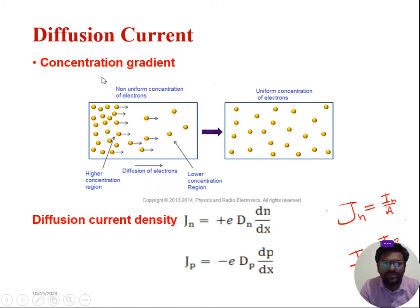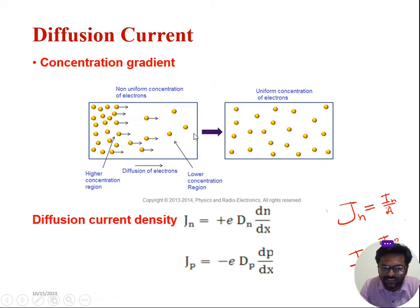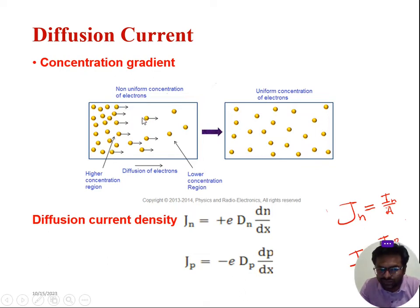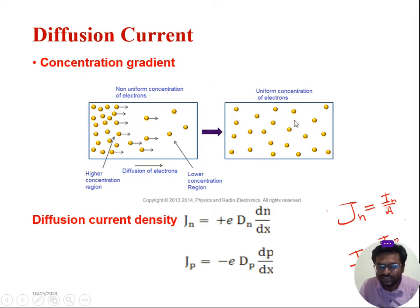Starting with diffusion current: diffusion current exists in the semiconductor because of non-uniform concentration of charge carriers. This status of non-uniform concentration of charge carriers is also called as concentration gradient. Now we try to understand how the concentration gradient will lead to diffusion current. We will see this diagram — in this region charge concentration is very high, here the charge concentration is very less. So as a natural tendency, and also like poles repel each other, these charge carriers which are present in heavily concentrated area tend to move towards less concentrated area. So this movement of charges will lead to a current called as diffusion current, and this movement of charges will happen till the equal distribution of charges happens, like this diagram.